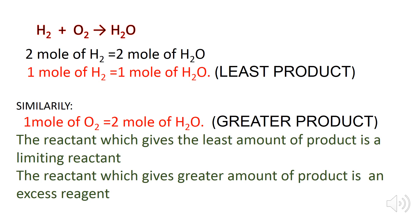Similarly, one mole of oxygen produces two moles of water. The reactant which gives the least amount of product is the limiting reactant. Here, hydrogen is giving the least amount of water — that is one mole — so hydrogen is the limiting reactant.